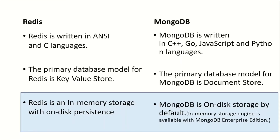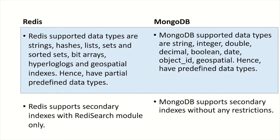Redis is an in-memory storage with on-disk persistence, whereas MongoDB is by default an on-disk storage. If you want in-memory storage, you can get it with the MongoDB Enterprise Edition.